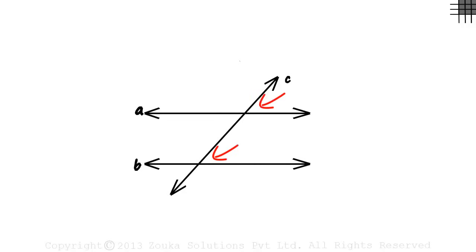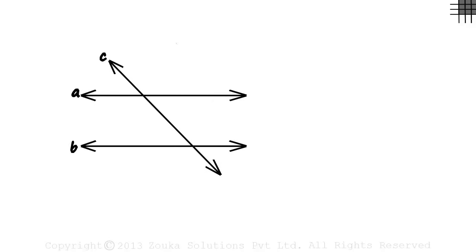These two angles again seem to be equal. Now let's rotate the transversal towards the left. The angles become obtuse and are still equal. This tells us that the corresponding angles are always equal. Now let's go back to the previous page.